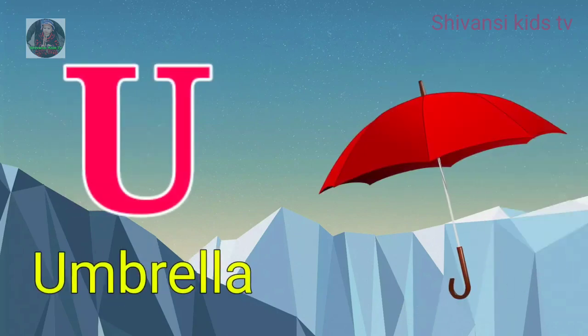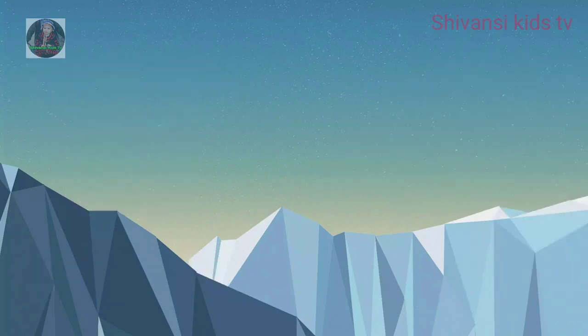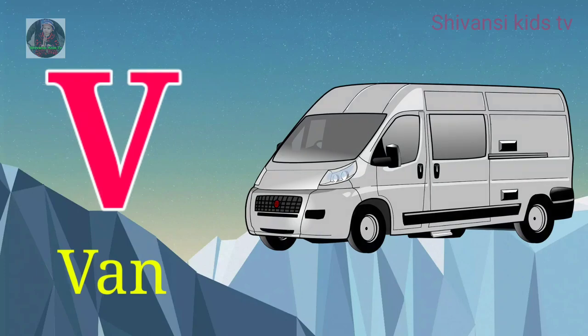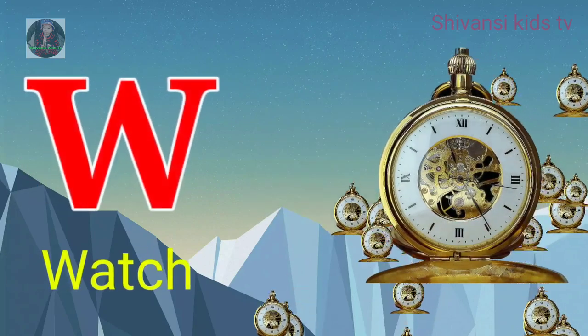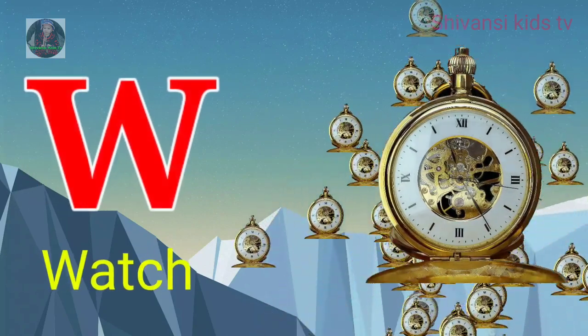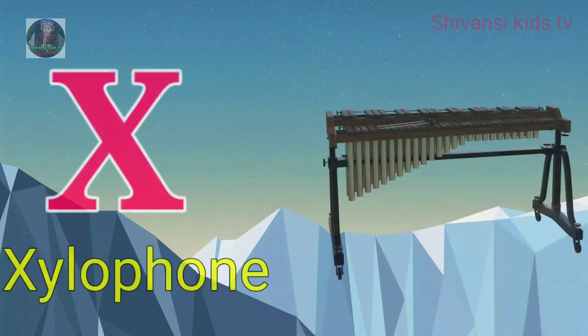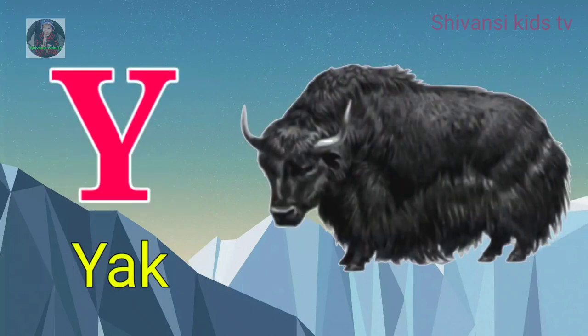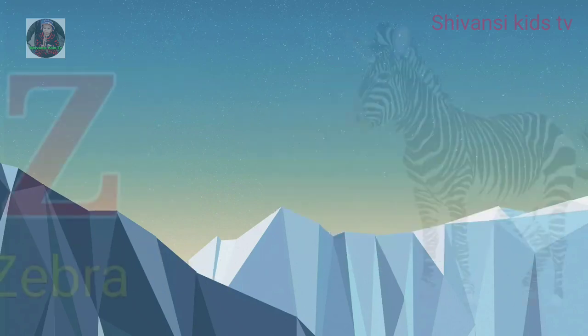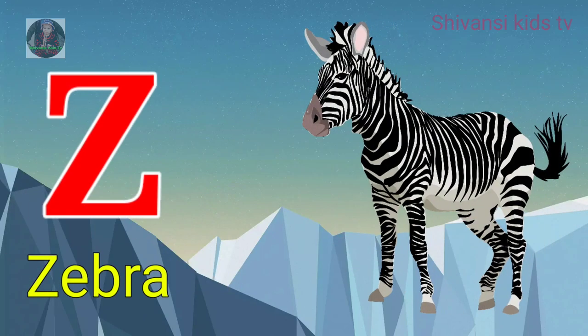U for umbrella, V for van, W for watch, X for xylophone, Y for yard, Z for zebra.